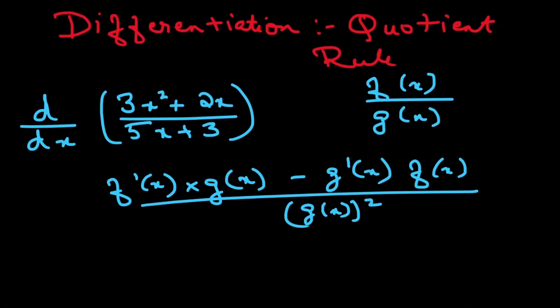So now I am going to do the same for this question. First, I am going to differentiate the numerator, which is going to be 6x + 2, times the denominator, 5x + 3, and then I am going to subtract the differentiation of the denominator.